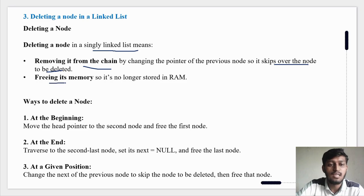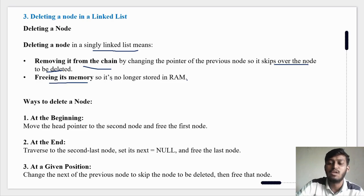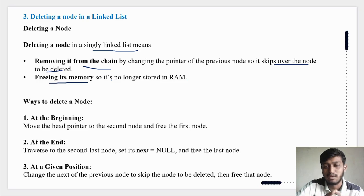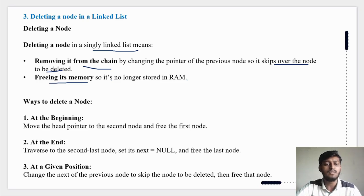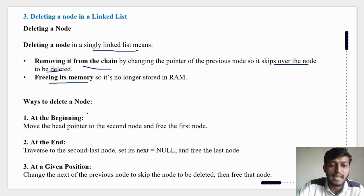Freeing its memory means it is no longer stored. If you want to remove a node, you free it and delete it. There are three ways to delete a node — at the beginning, at the end, and at a specific position.